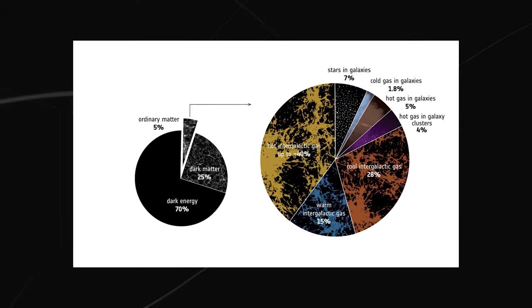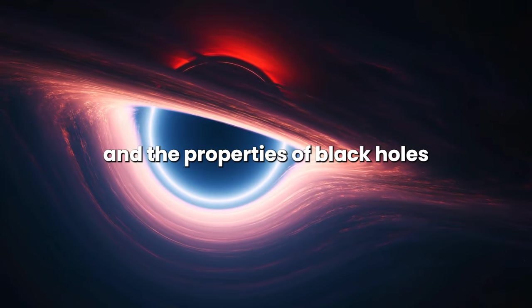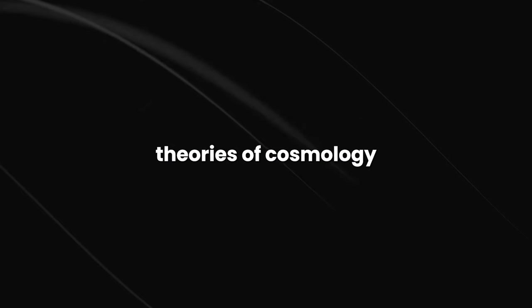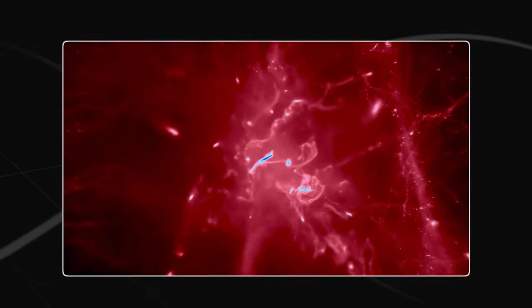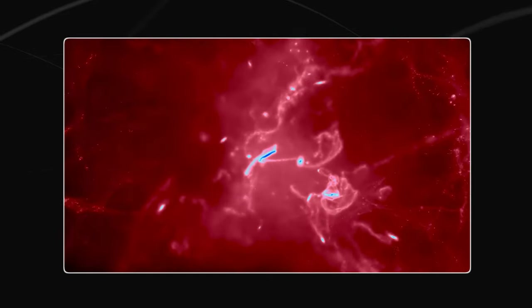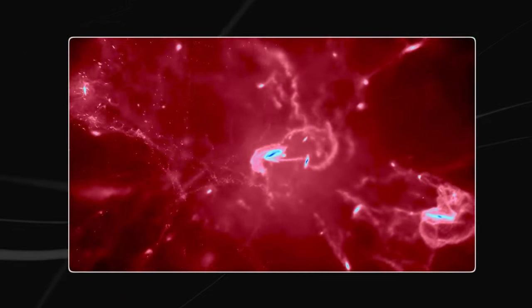They can also help to test theories of cosmology in the early universe. One example of this is the use of AI to simulate the formation of the first galaxies in the universe. These simulations are used to study how galaxies formed in the early universe when the first stars and black holes were created.